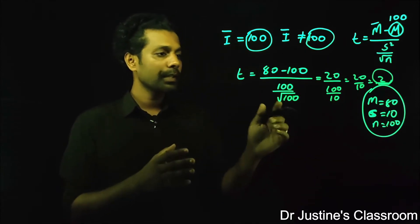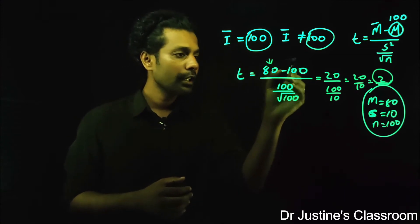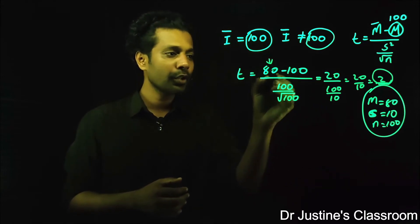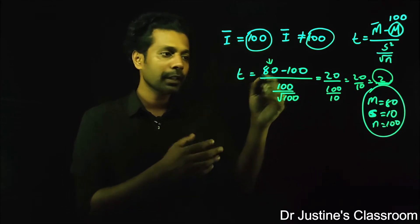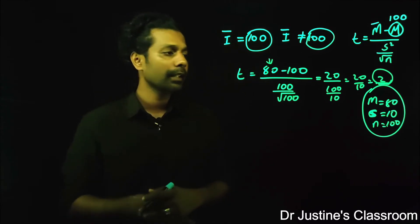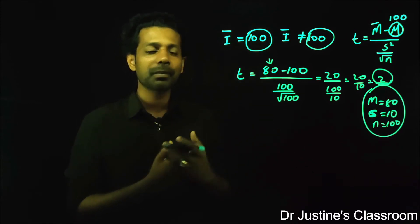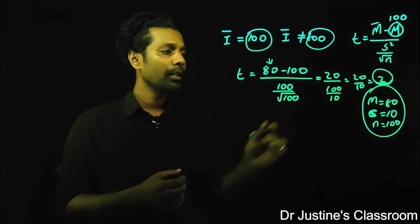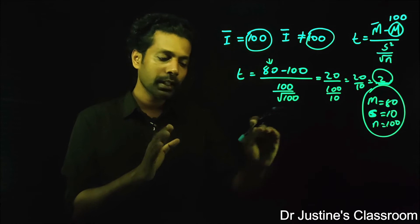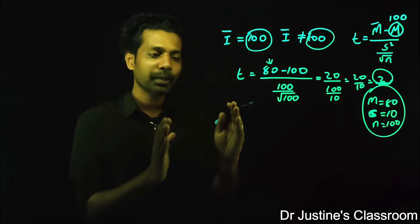This tells me that the value 80 is 2 standard deviations away from 100. It is 20 units away from 100, but in terms of standard deviation it is 2 standard deviations away from 100 toward the left — the negative side. The reason we talk about standard deviations instead of raw deviation is that when we plot this on a t-distribution, we can understand the probability of that value occurring.